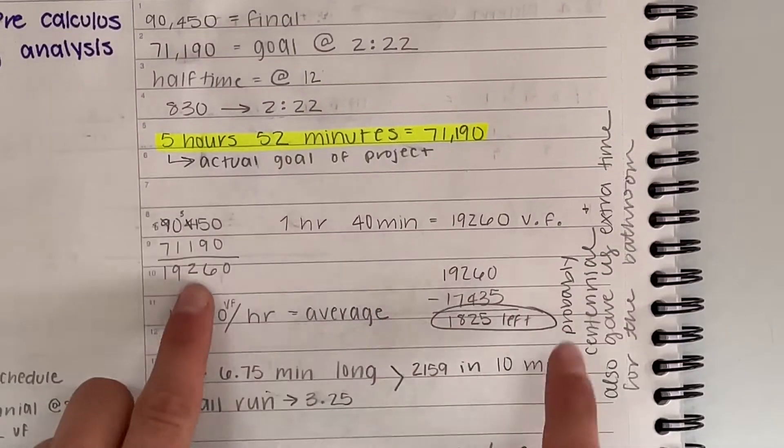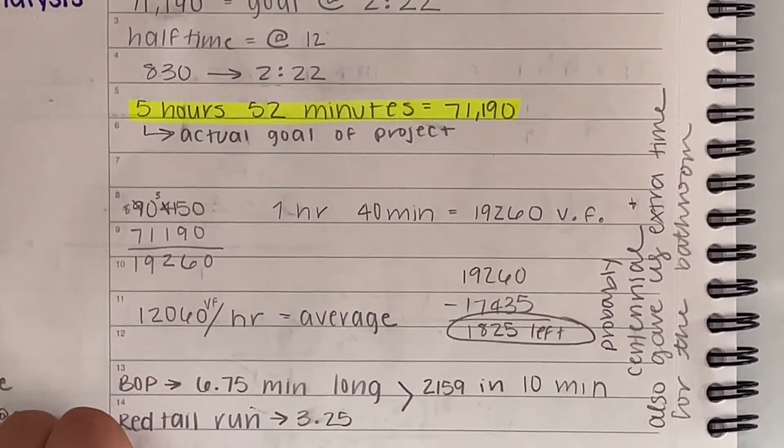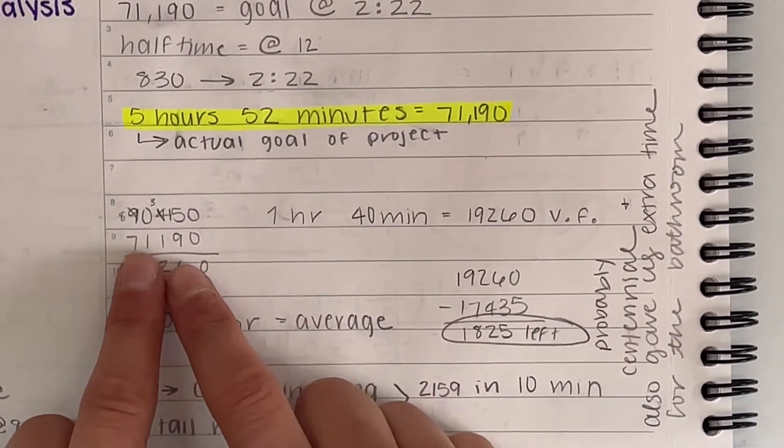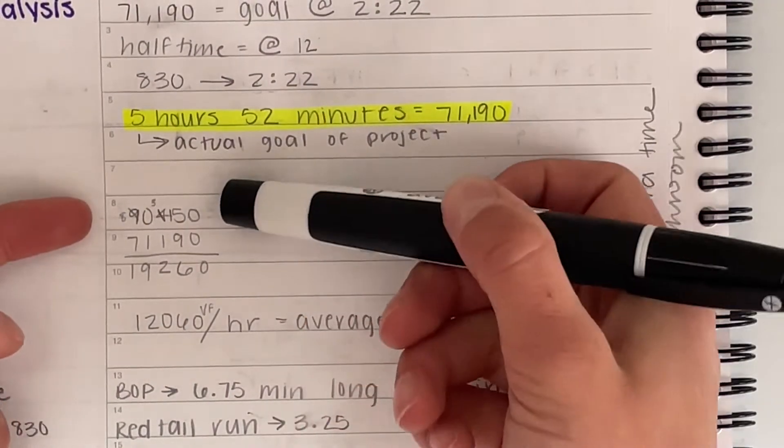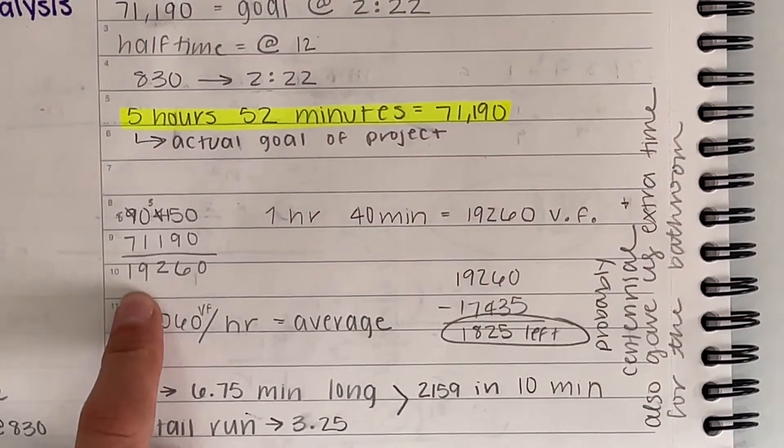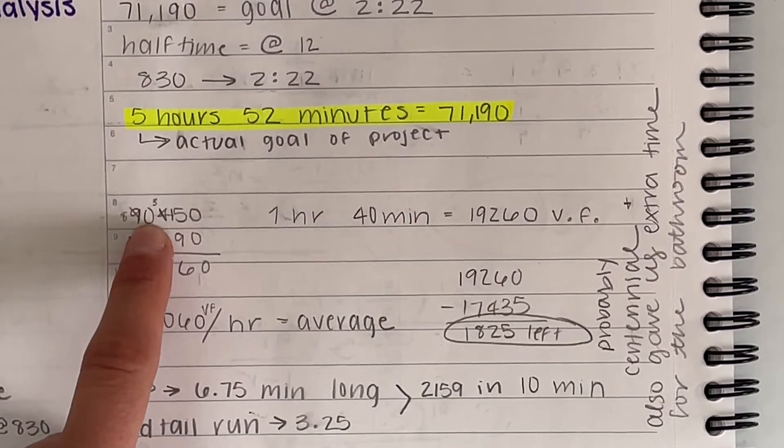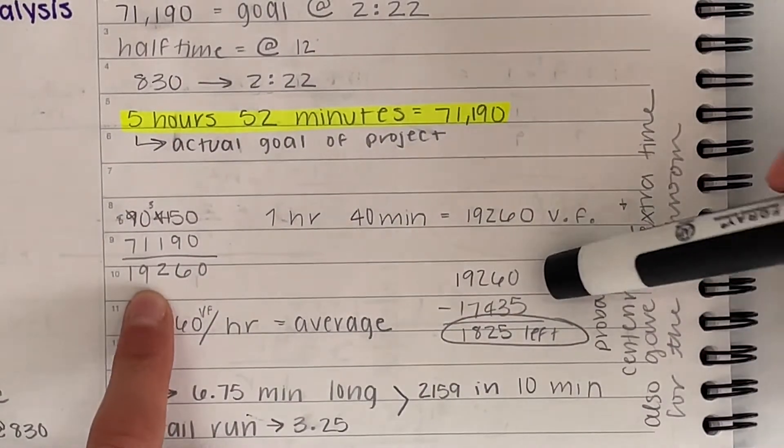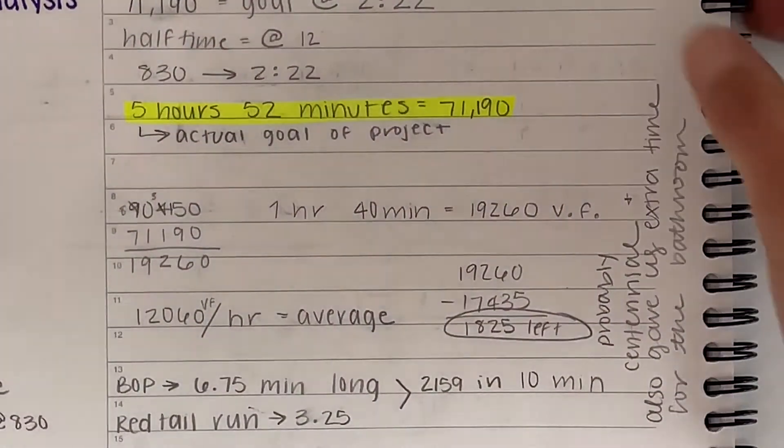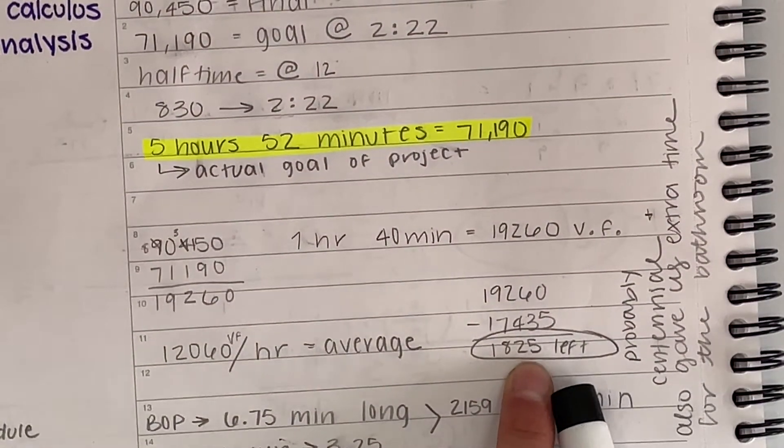Now I'm going to explain the math I did up here and here. So this is our total that you can see 90,450 vertical feet. And then this is the total that we were able to get, which is the 70,000. So you take the final minus the goal. And that meant that we needed to get 19,260 more vertical feet in order to meet 90,000. So 90,000. And then you basically, I subtracted the amount of vertical feet that I messed up on, which is down here and you're able to get 1,825 vertical feet left.